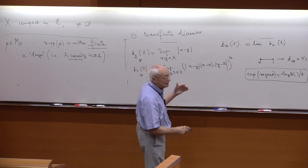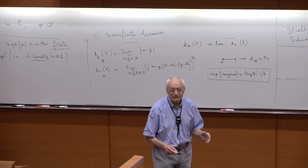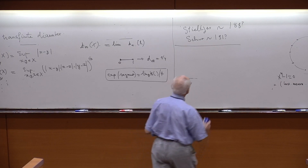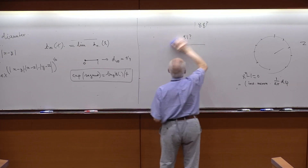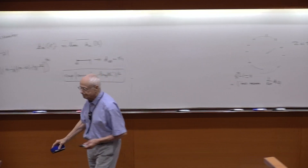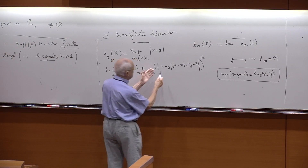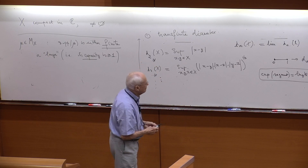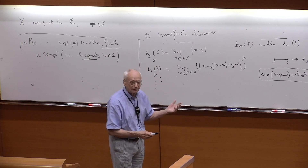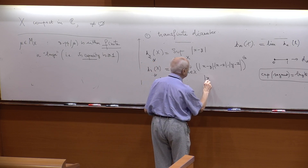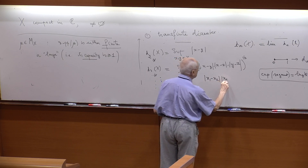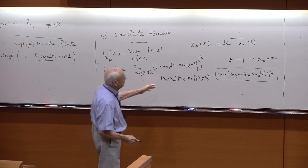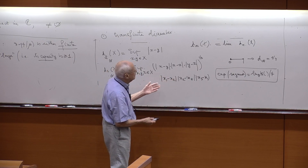In general, the capacity of a segment is the length of the segment divided by 4. So if you want capacity at least 1, for a segment you need length at least 4. You see the Kronecker case is exactly 4. There is a second definition which is even more useful — a continuous analog. If you take the log of the transfinite diameter, you realize it is a kind of mean value of log|x − y|. So the second definition is: log(cap(X)) = sup over positive mass-1 measures μ supported by X of the double integral ∬ log|x − y| dμ(x) dμ(y).